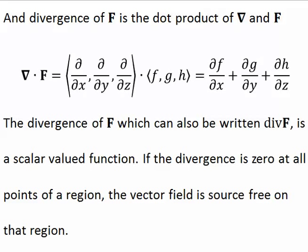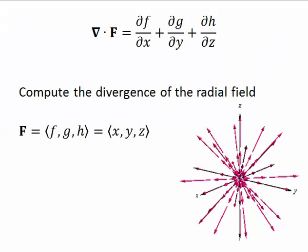The divergence of a vector field, which can be written div F, is a scalar-valued function. If the divergence is zero at all points of a region, the vector field is source-free on that region.